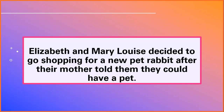The dependent clause is 'after their mother told them that they could have a pet.' If I walk up to you and say, 'After their mother told them that they could have a pet,' and then stop, you're gonna look at me like — who, what, when, where, why? 'Elizabeth and Mary Louise decided to go shopping for a new pet rabbit' is a complete thought, so it's independent. My independent clause is at the beginning, my dependent clause is at the end, so I don't need a comma.